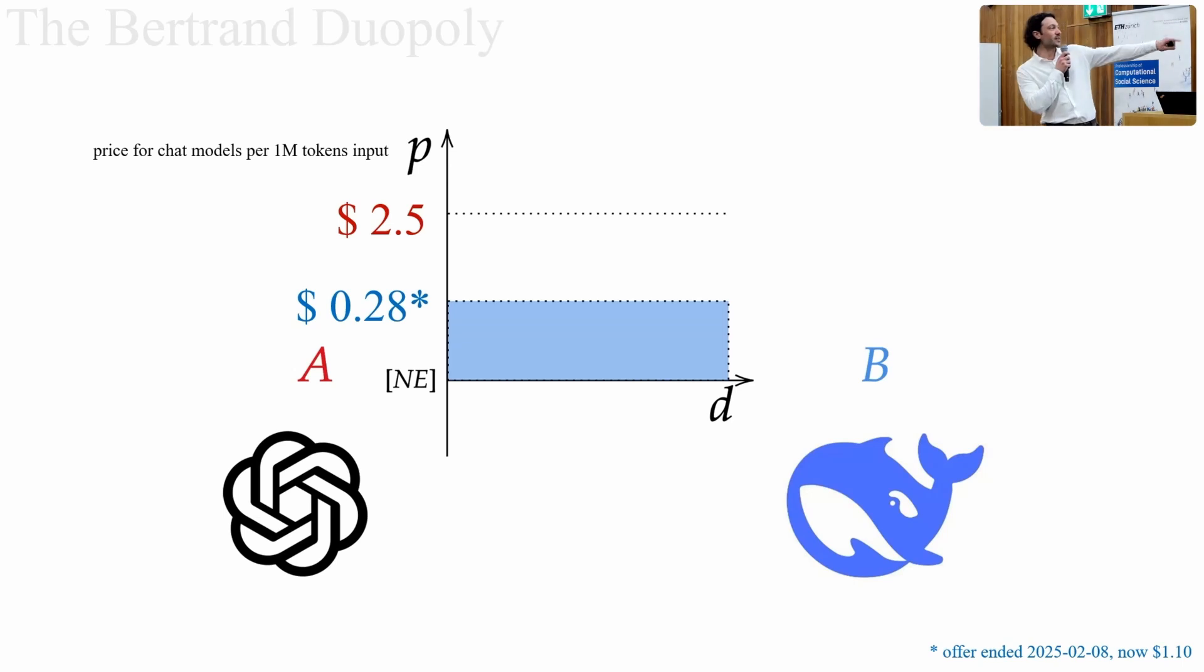This price has actually increased since the weekend because it was a limited time offer. But very clearly here, DeepSeek is undercutting the price of ChatGPT. They are trying to attract demand to their own platform. They are competing in this market without many other players. Certainly there are a few other players, but we'll just restrict ourselves to this case where we'll just keep imagining there are these two representative players.